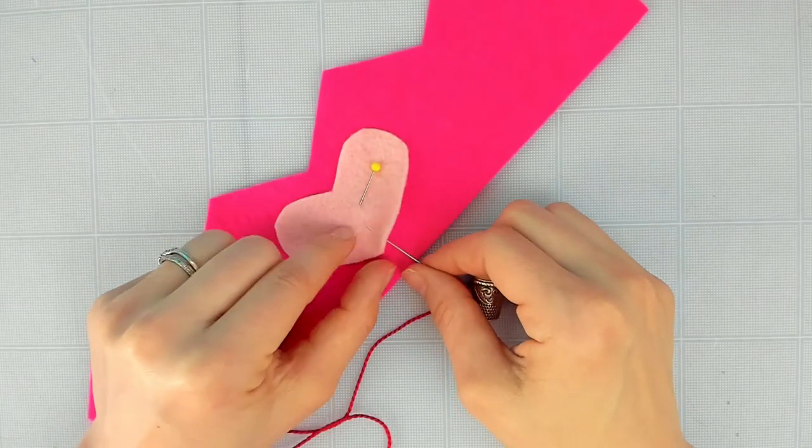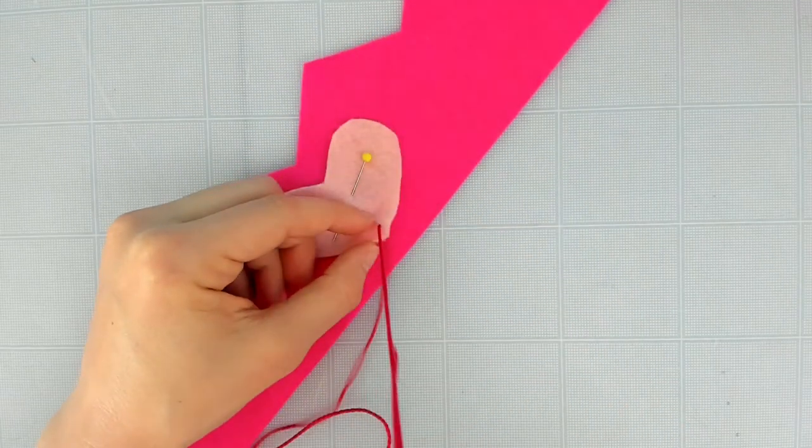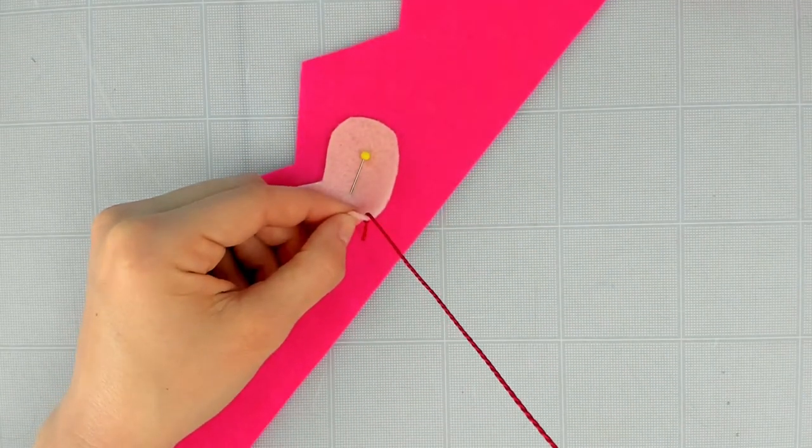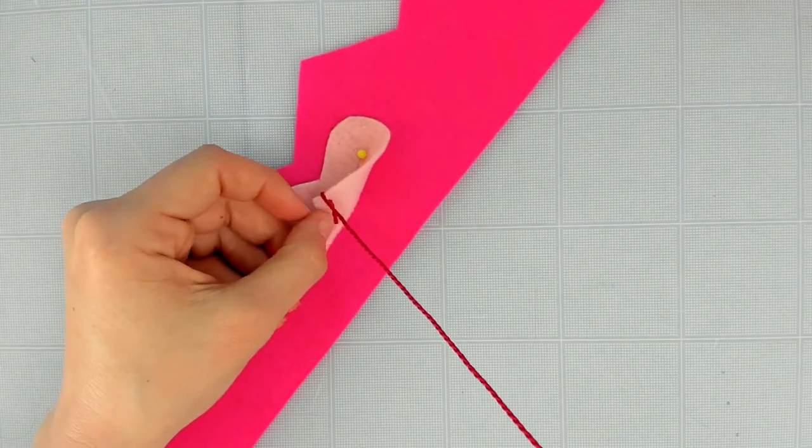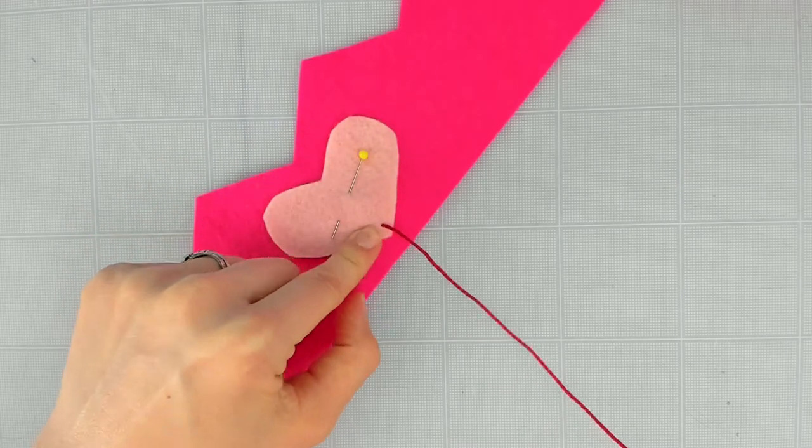So my first step is just to pick my starting point and pull my thread through. And then I will tuck this little tail in between the two pieces.